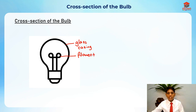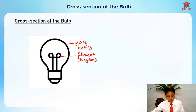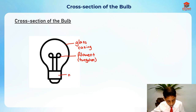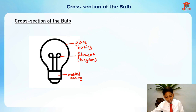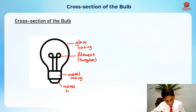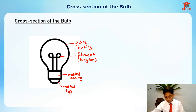The filament is usually made out of tungsten. Next, we have the metal casing and lastly the metal tip. You need to know how the light bulb actually lights up.